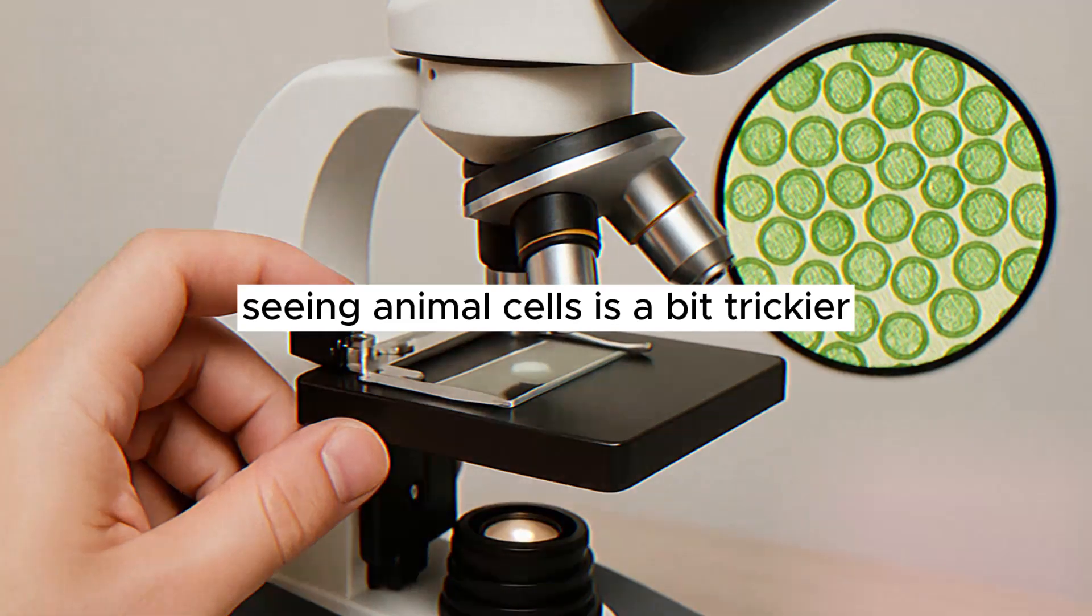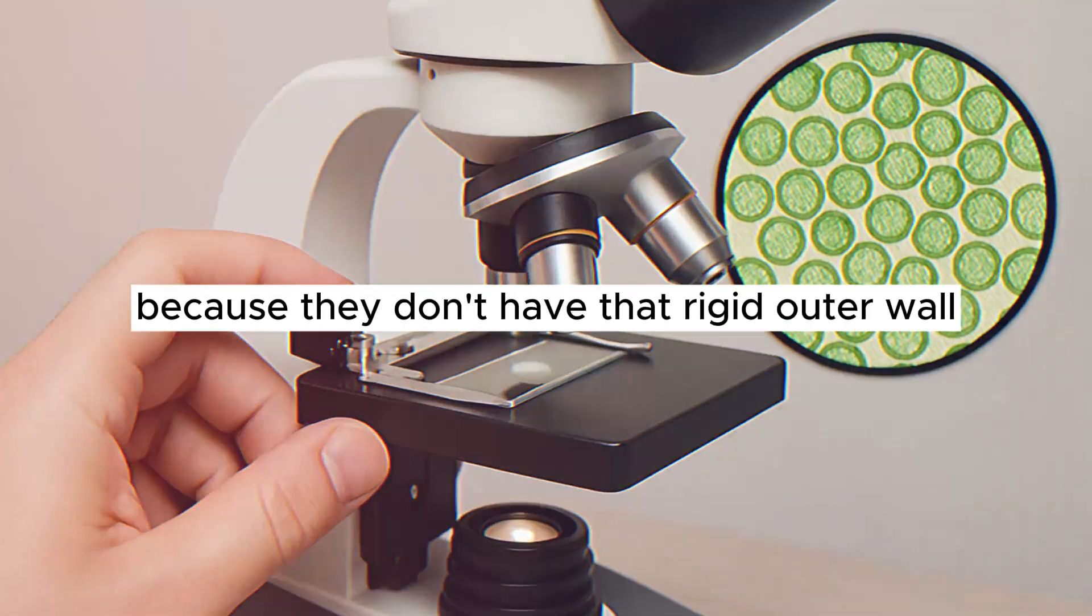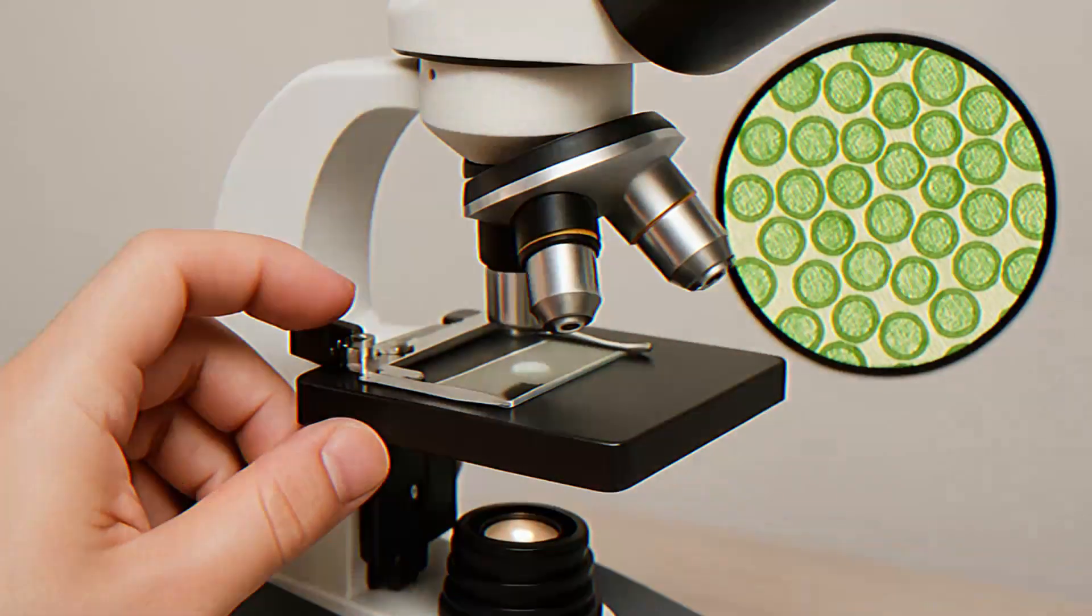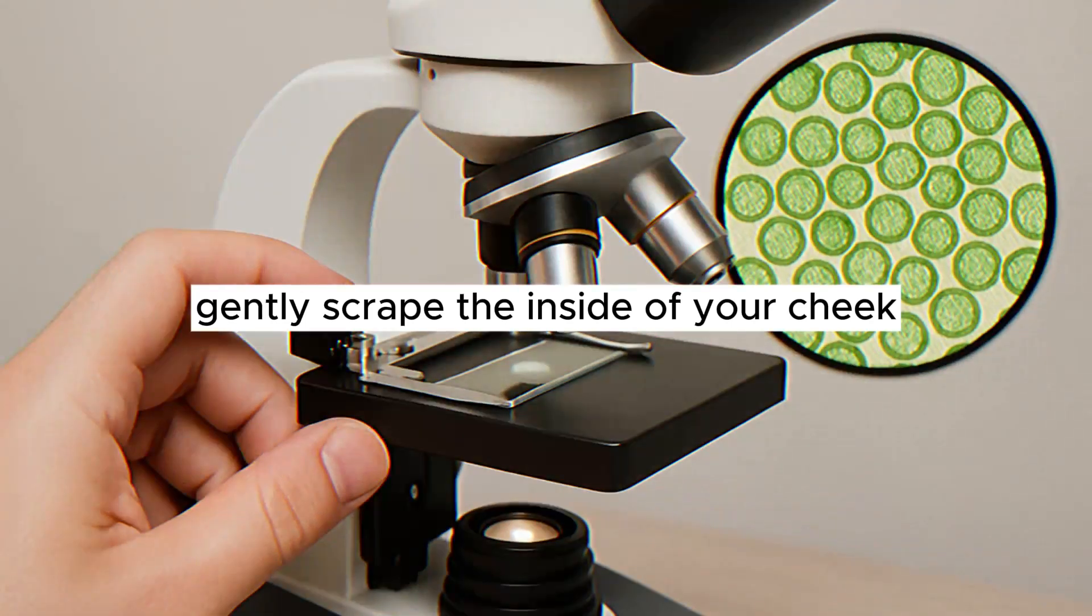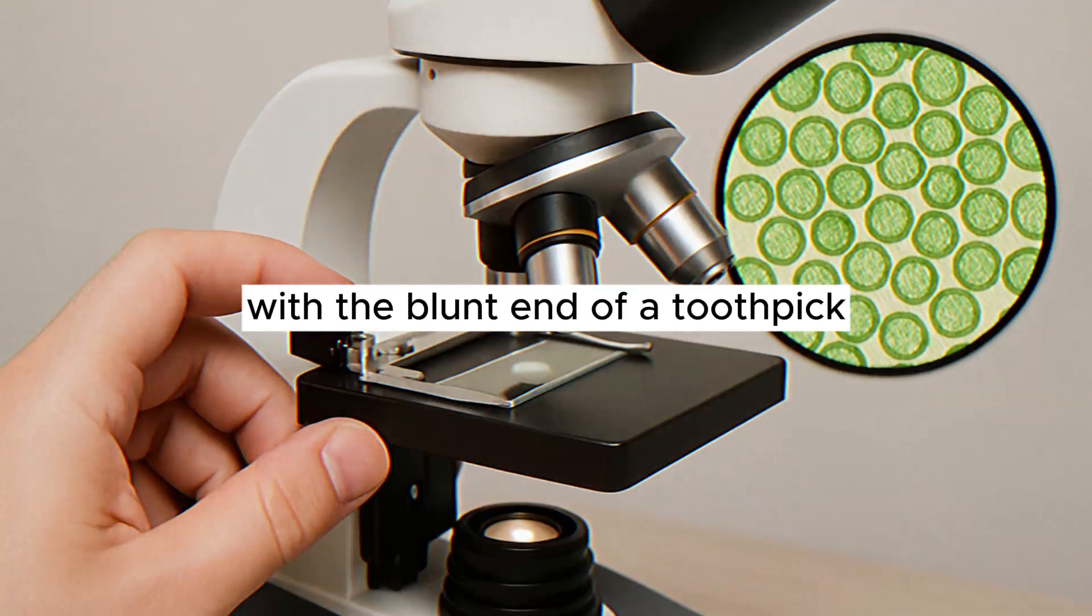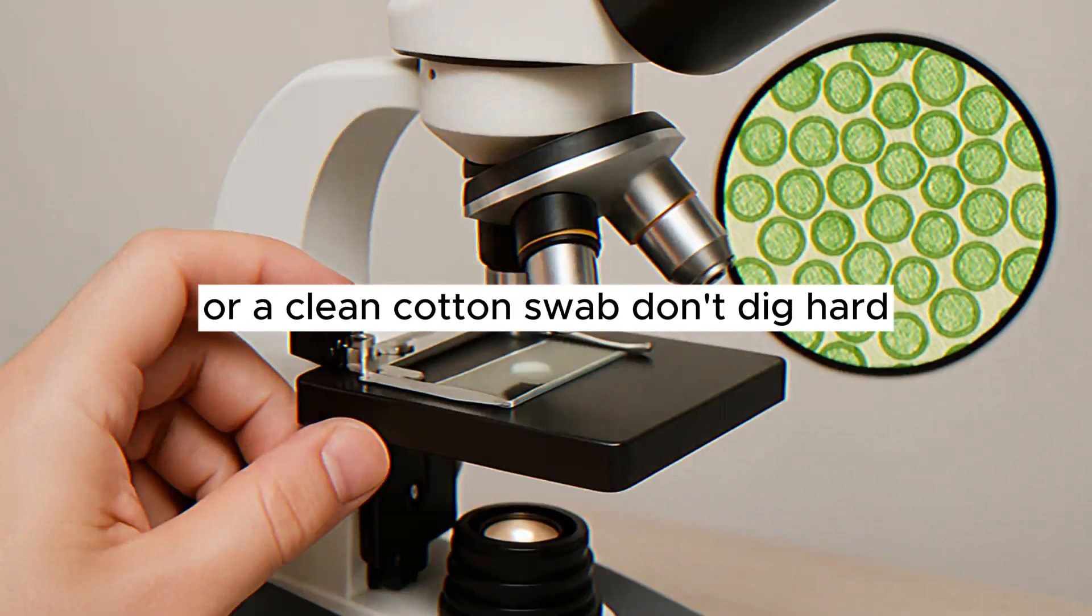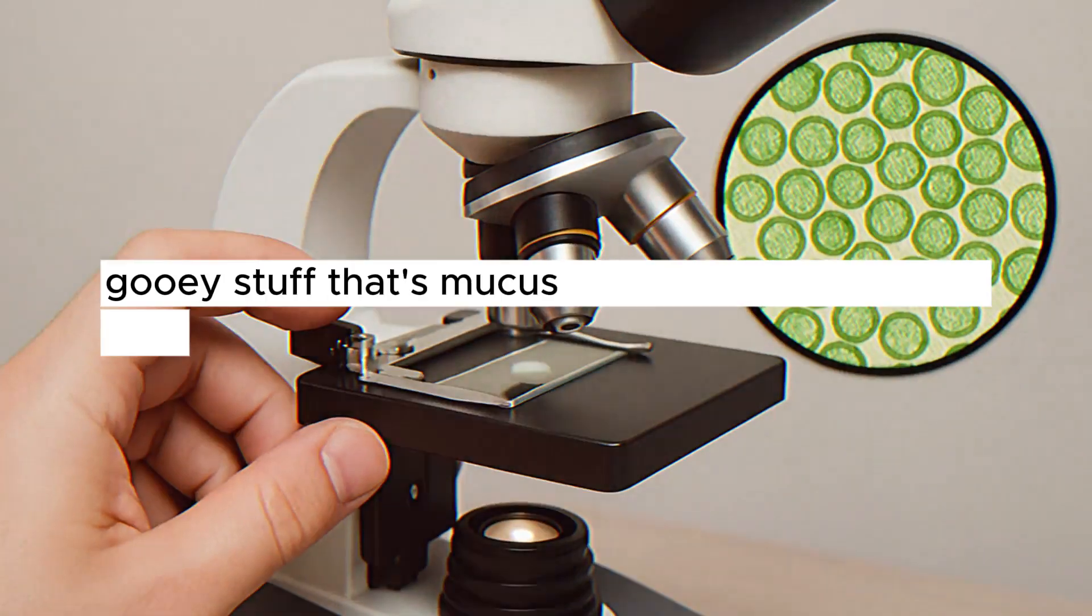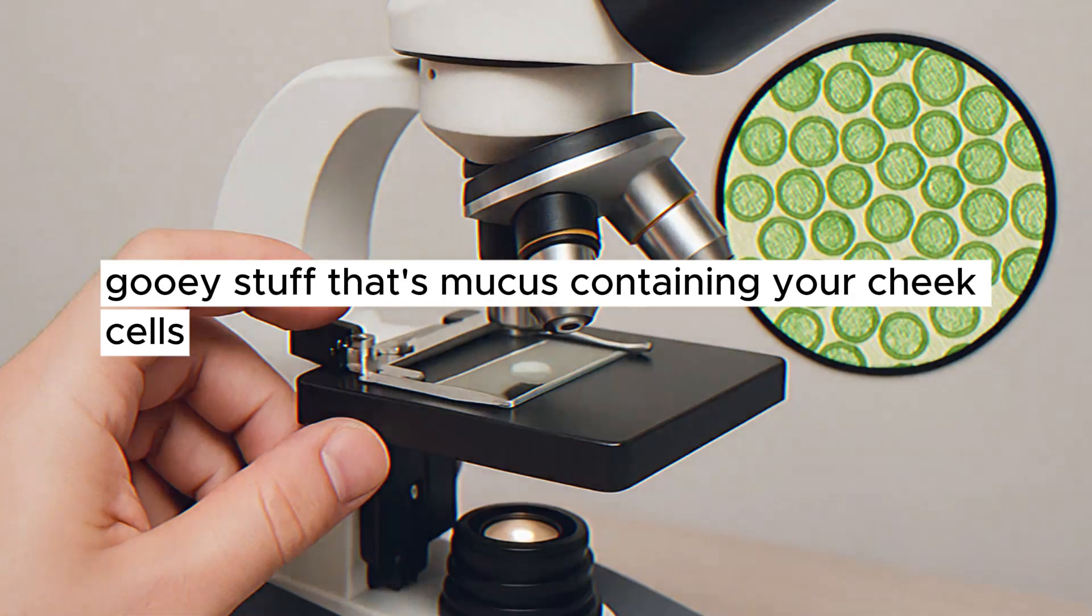Seeing animal cells is a bit trickier because they don't have that rigid outer wall. A common first animal cell to observe is your own. Cheek cells are surprisingly easy to get. Gently scrape the inside of your cheek with the blunt end of a toothpick or a clean cotton swab. Don't dig hard, just a light scrape.